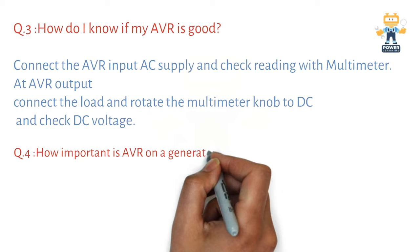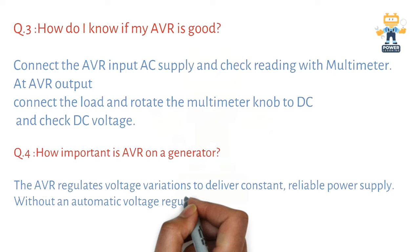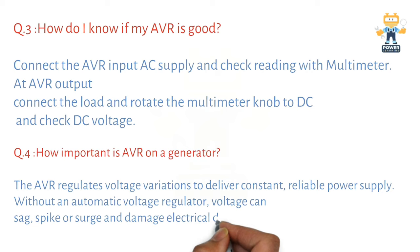Question number four: How important is AVR on a generator? The AVR regulates voltage variation to deliver constant, reliable power supply. Without an automatic voltage regulator, voltage can sag, spike, or surge and damage electrical loads.